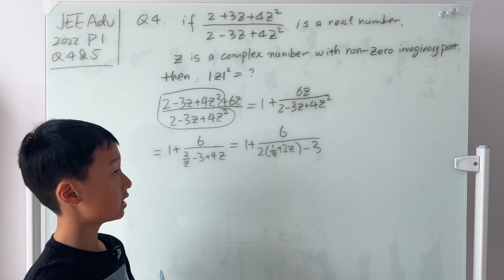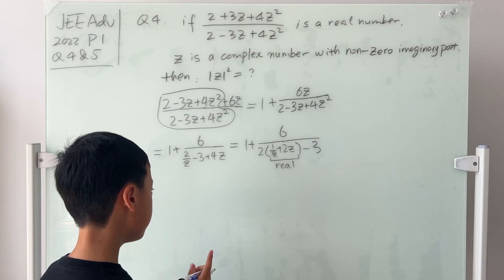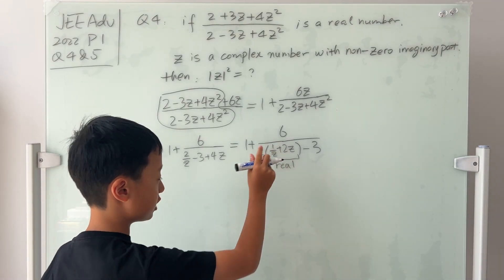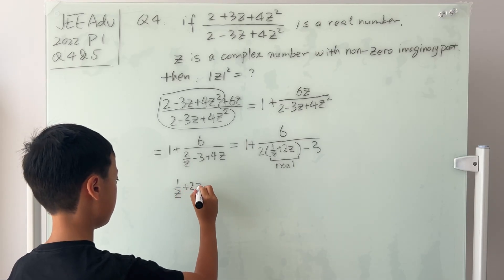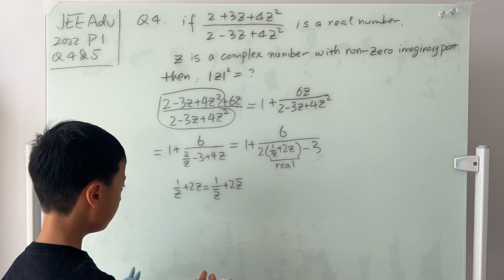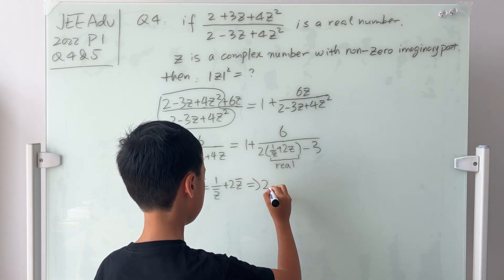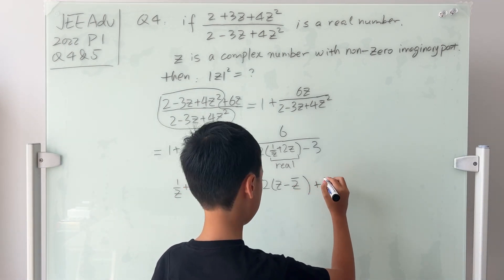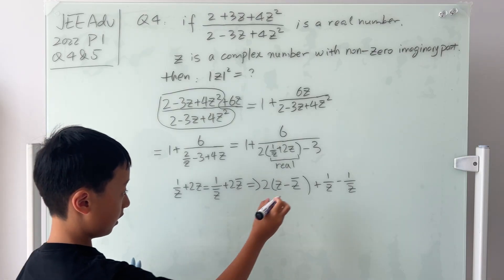The given information tells us that the whole thing is real, so we know that the inside also has to be real. Real numbers all have imaginary part 0, so a real number and its conjugate are the same. We can conclude that 1 over z plus 2z is equal to 1 over z conjugate plus 2z conjugate. We can move this stuff around — factor out the 2, giving us 2 times z minus z conjugate — and move this here. This is equal to 0.